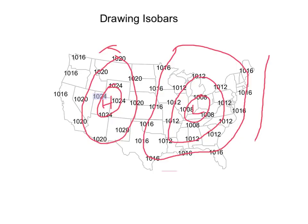Now you can look at this map and give a little weather forecast. This area over here by Colorado, Wyoming, and Utah has a high pressure center located over them, so they're going to have clear, sunny skies. Whereas Kentucky, Ohio, and Illinois have this low pressure center, so they're going to have some rain or storms.